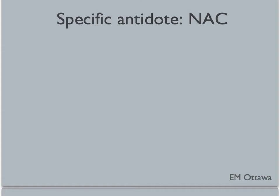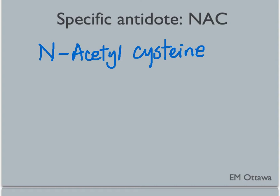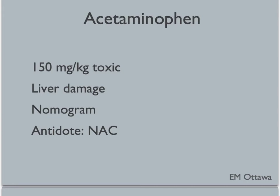We have a specific antidote for acetaminophen: N-acetylcysteine. If given early, it will stop acetaminophen's damage to the liver. This medication can be given either orally or intravenously — in Canada, we often use the intravenous approach. To summarize: acetaminophen is toxic at over 150 milligrams per kilogram, causes liver damage, and we plot the serum level and time since ingestion on the nomogram. If the patient is toxic by the nomogram, we start N-acetylcysteine as the direct antidote.